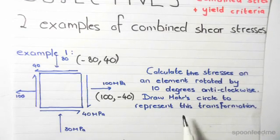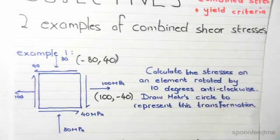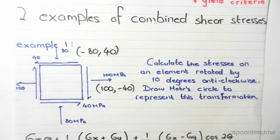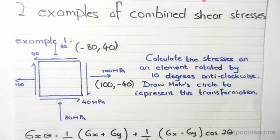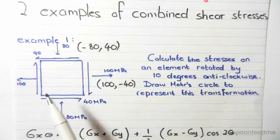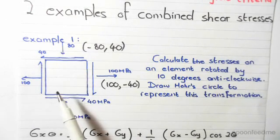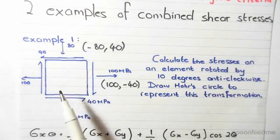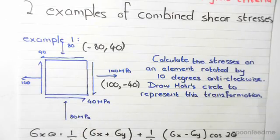So immediately, the fact that we know it's rotated 10 degrees anti-clockwise in reality corresponds to a rotation of 20 degrees, so 2 times 10, 20 degrees in the opposite direction clockwise in the Mohr's circle.